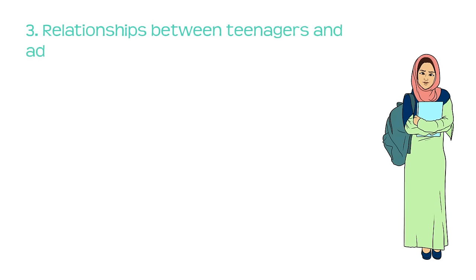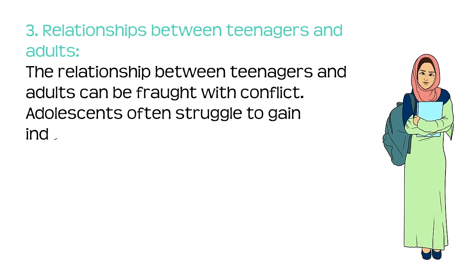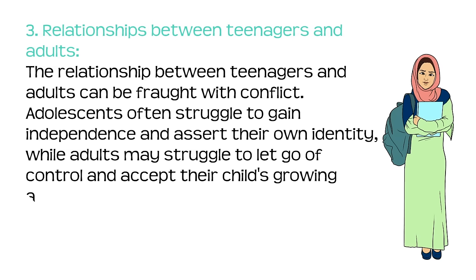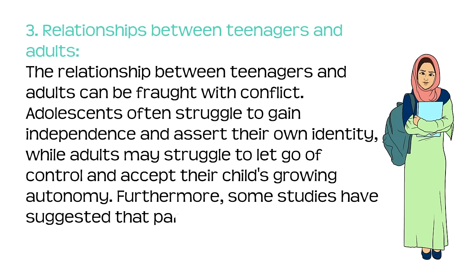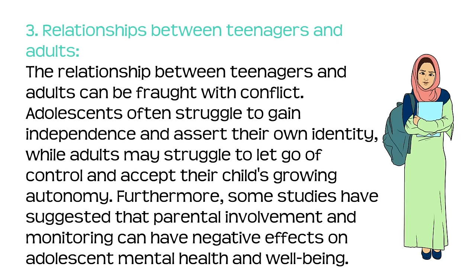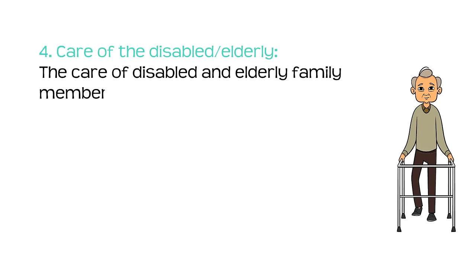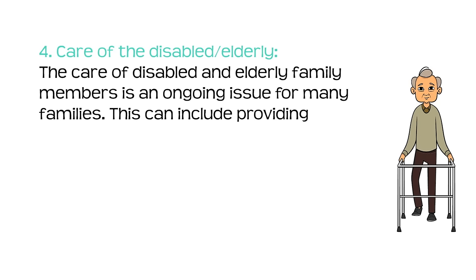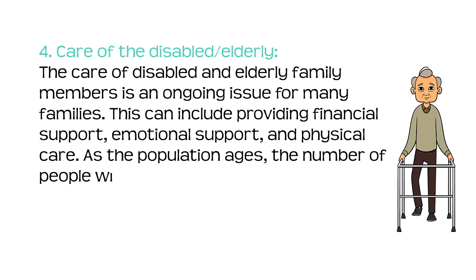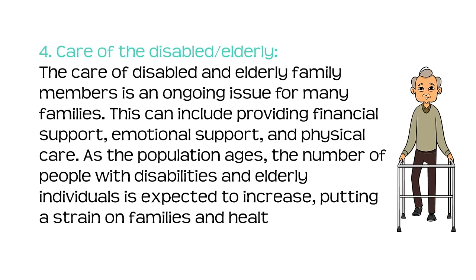Number three: relationships between teenagers and adults. The relationship between teenagers and adults can be fraught with conflict. Adolescents often struggle to gain independence and assert their own identity, while adults may struggle to let go of control and accept their child's growing autonomy. Furthermore, some studies have suggested that parental involvement and monitoring can have negative effects on adolescent mental health and well-being. Number four: care of the disabled and elderly. The care of disabled and elderly family members is an ongoing issue for many families, which can include providing financial support, emotional support and physical care. As the population ages, the number of people with disabilities and elderly individuals is expected to increase, putting a strain on families and healthcare systems.